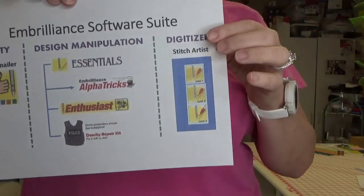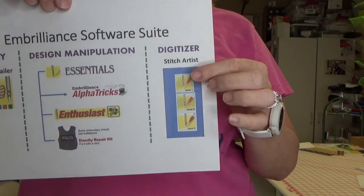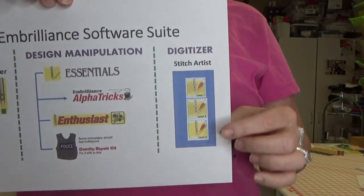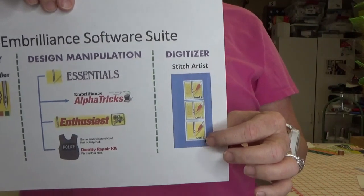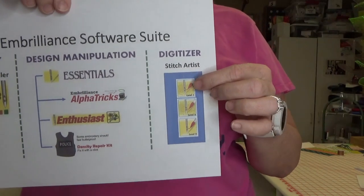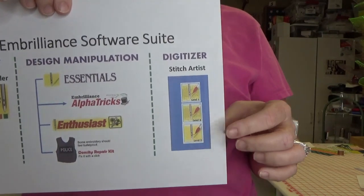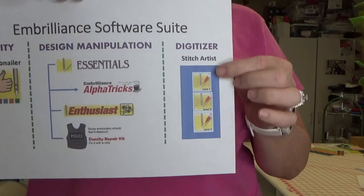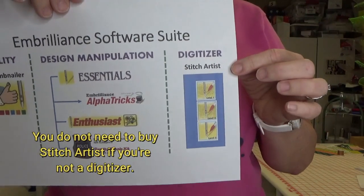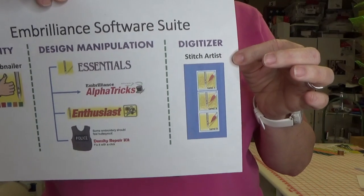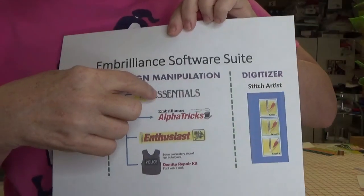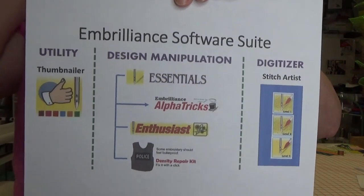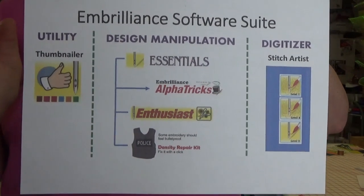Over here we have Stitch Artist 1, 2, and 3 — they build on one another. You can buy each one independently, but you need Stitch Artist 1, then 2, then 3. This is for digitizing — for creating embroidery files from nothing. Those are very advanced for people who want to be creating designs from scratch. Essentials is the basic that you would want for resizing, merging, that type of thing — that's exactly what I was using the other day on those mug rugs.